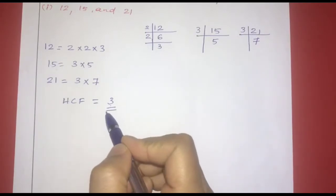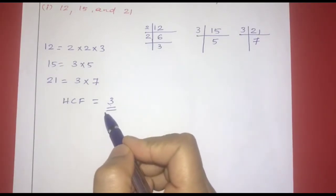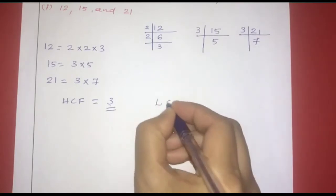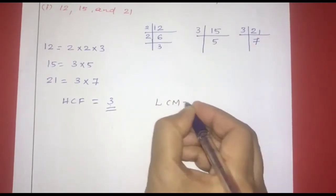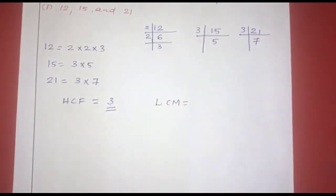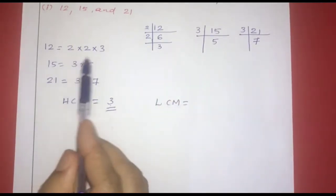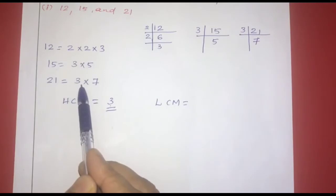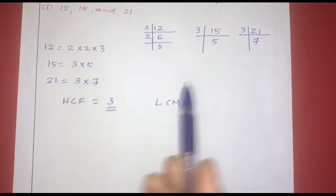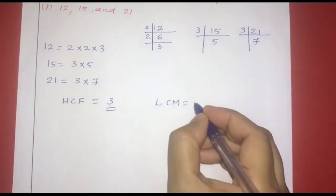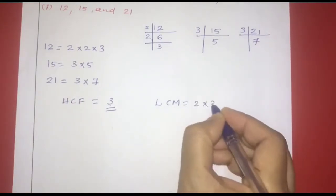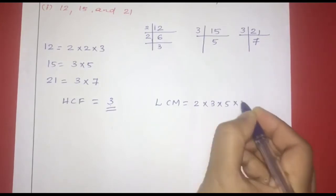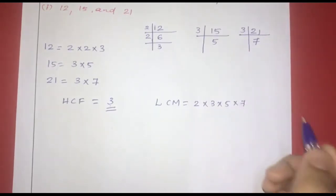Therefore, the HCF is 3. Now for LCM, we consider all prime numbers appearing in any of the factorizations. The prime numbers present are 2, 3, 5, and 7.